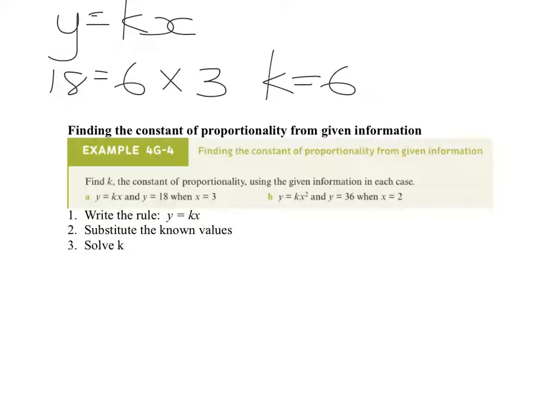Let's look at b. Let's use k squared and y is equal to 36, when x is equal to 2. So, write the rule, so we go y equals kx, okay. They say that y is 36, so we go 36.